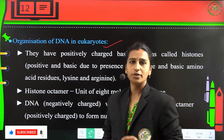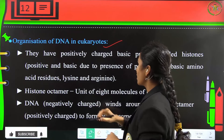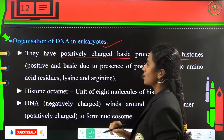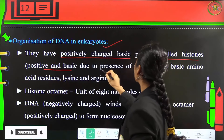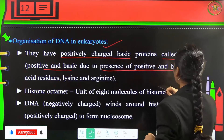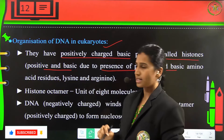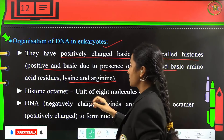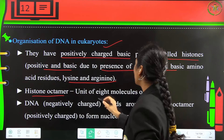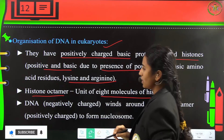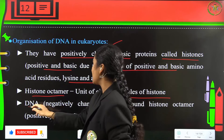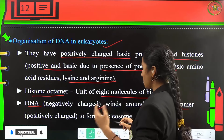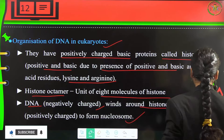Organization of DNA in eukaryotes: they have positively charged basic proteins called histones, which are positive and basic because of the presence of positively charged amino acid residues — lysine and arginine. The unit of eight molecules of histone is the histone octamer. Negatively charged DNA winds around the positively charged histone octamer, forming a nucleosome.